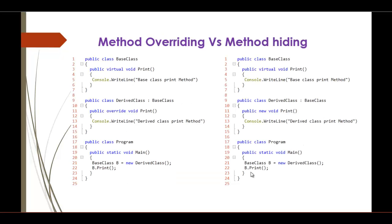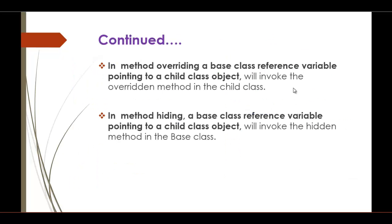When you call b.print in method hiding, it invokes the hidden member in the base class — that is the base class print method. That's all about method overriding and method hiding. Thank you. Please subscribe to Angpro Training. Have a great day.